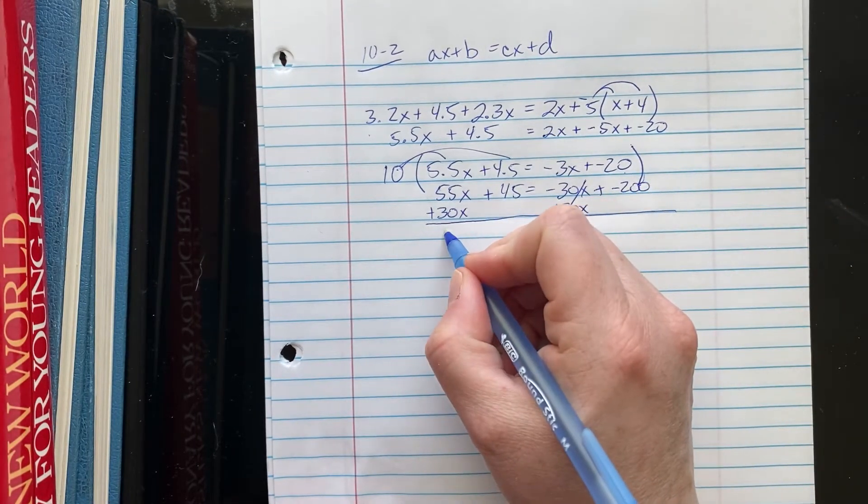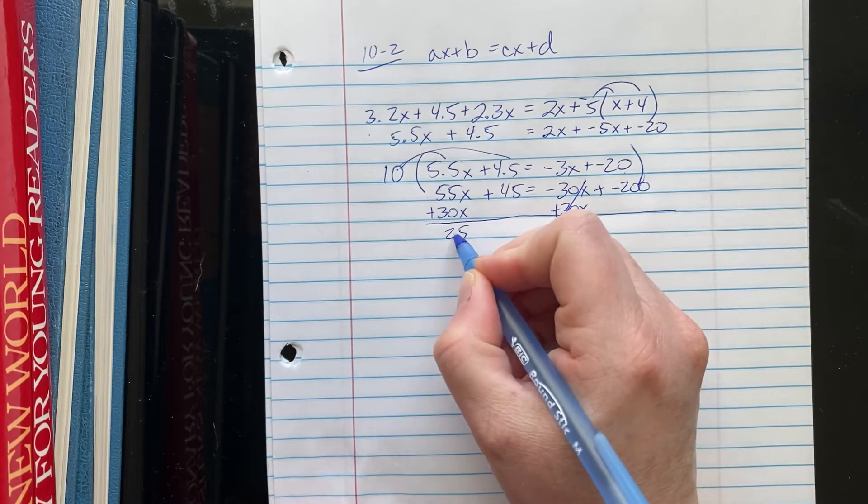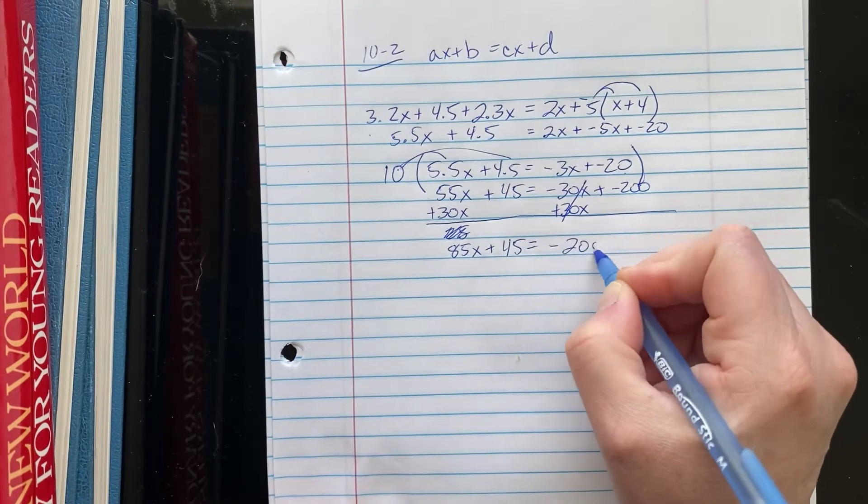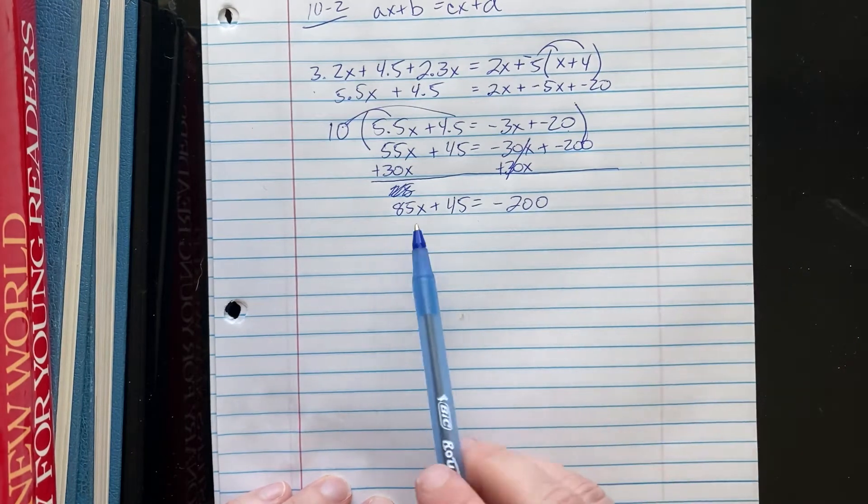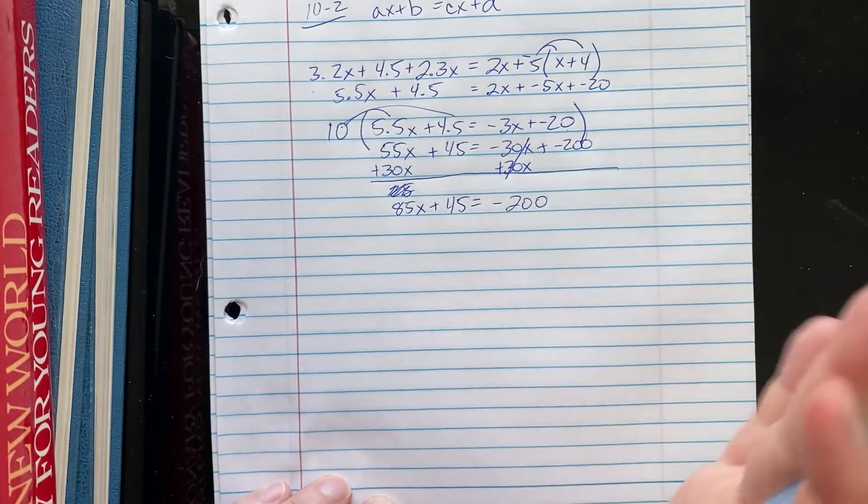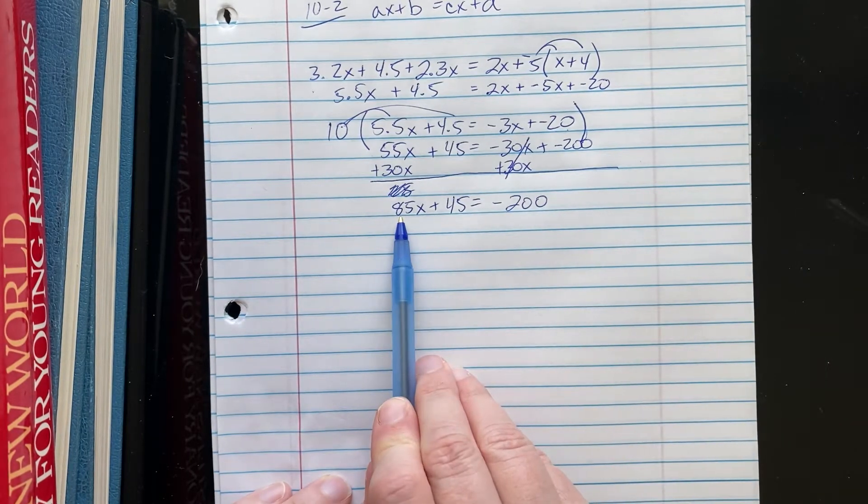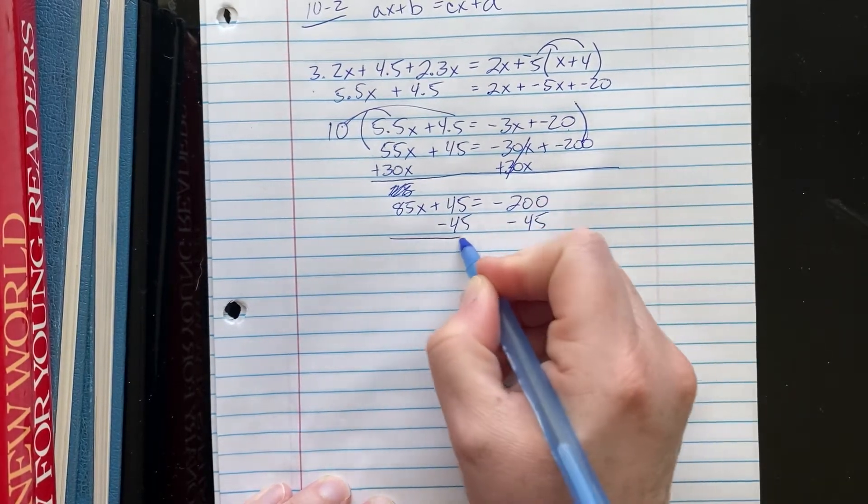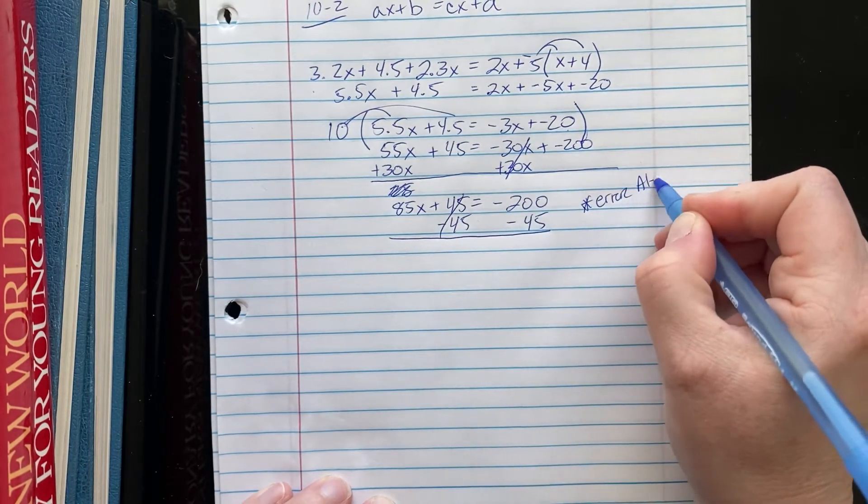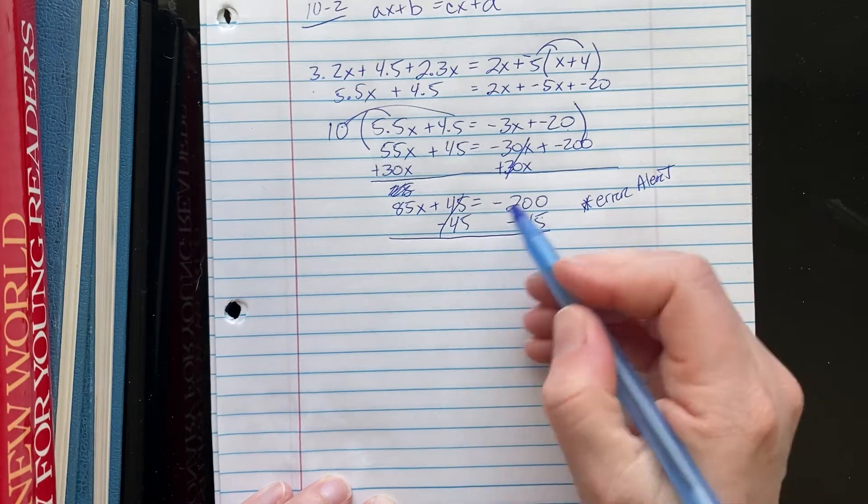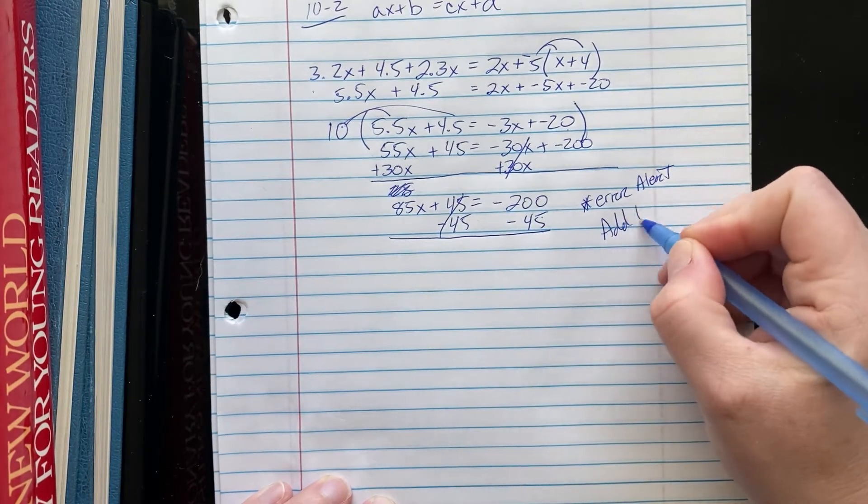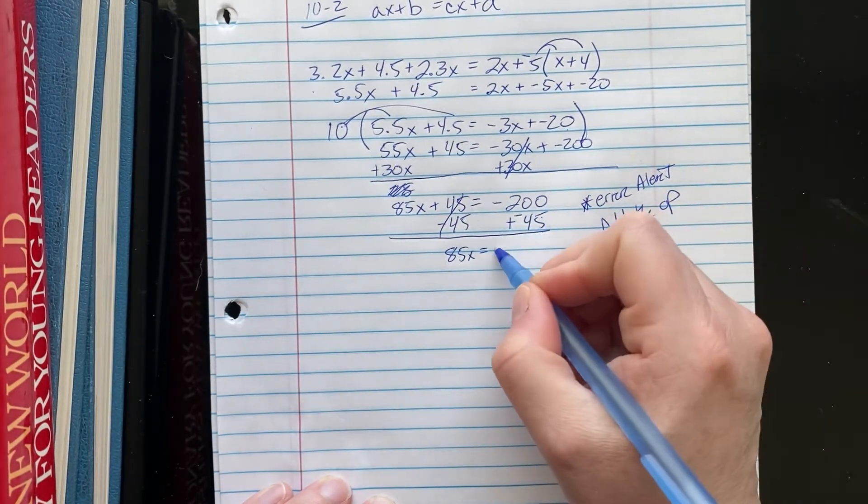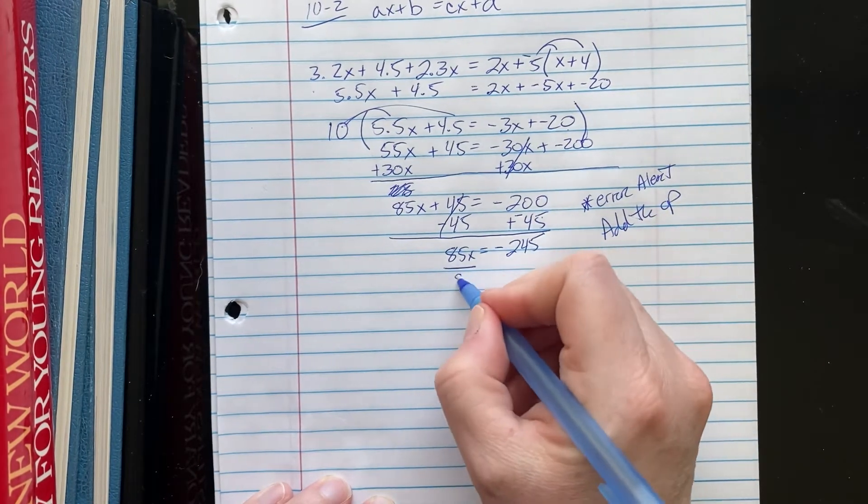You can start with any term. So that term goes to zero. Now I get 85X plus 45 equals negative 200. Think about which term you want to deal with next. We do not want to deal with this coefficient yet, because the X term is not isolated. So we're going to subtract 45 and subtract 45. This is a real error alert here for most students. Because you're subtracting a positive from a negative, you definitely want to add the opposite here. You're going to end up with 85X on the left-hand side, equals negative 245. All right. I'm dividing by that coefficient.